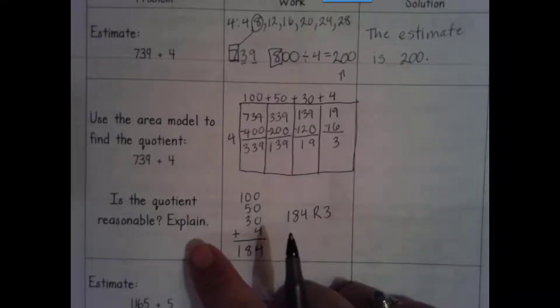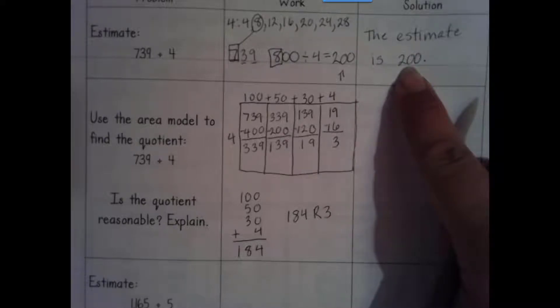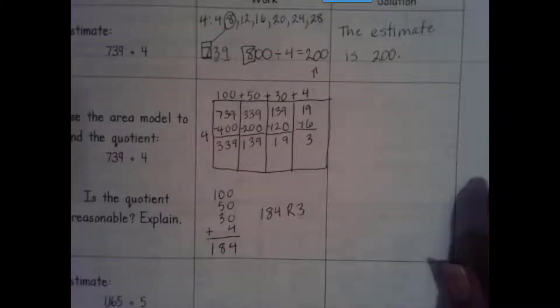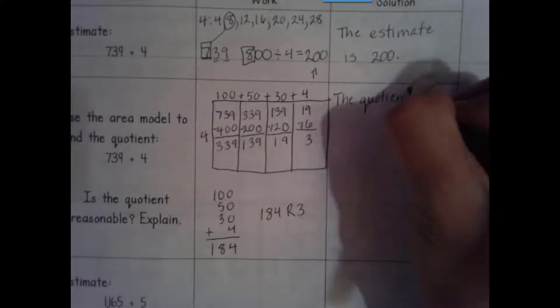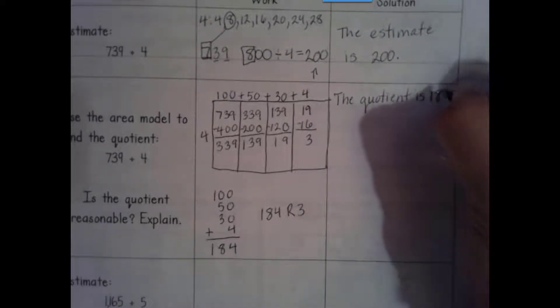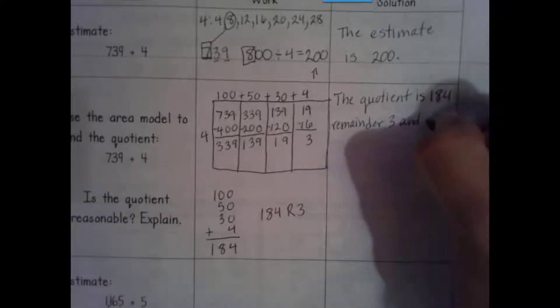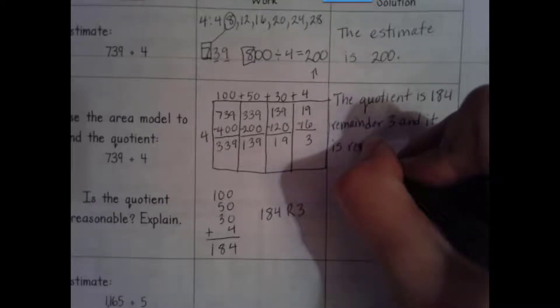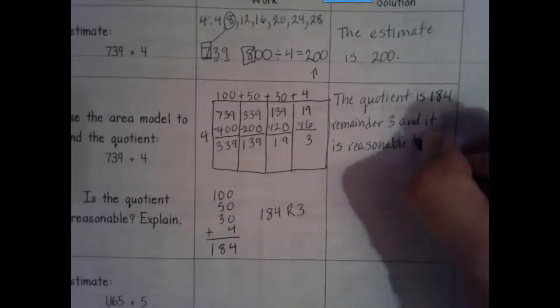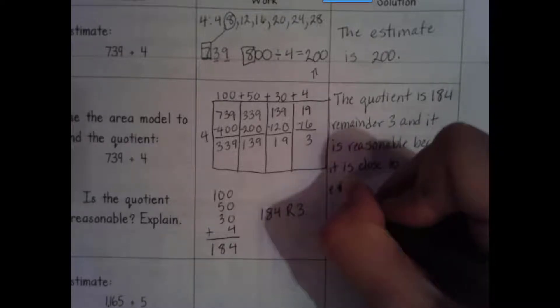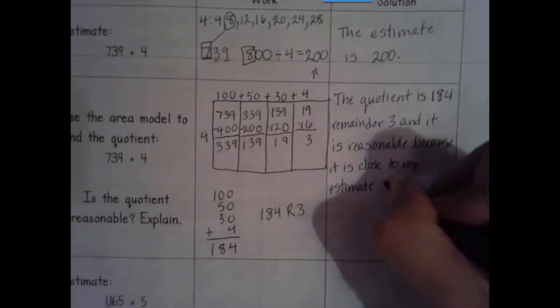We want to see if it's reasonable. Is 184 close to my estimate of 200? Yes. I knew 200 would be higher than the actual quotient — it is higher and it's pretty close, so it is reasonable. The quotient is 184, remainder 3, and it is reasonable because it is close to my estimate of 200.